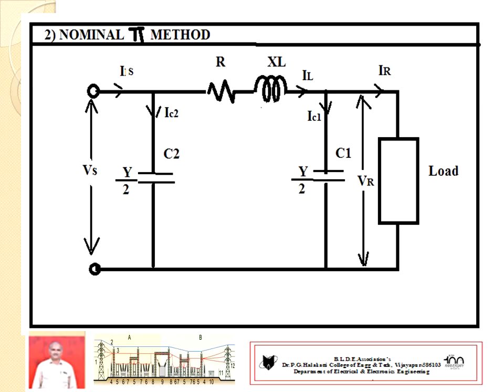In the nominal pi method, the capacitance is placed at two ends: fifty percent of capacitance is placed nearer to the sending end side and fifty percent is placed nearer to the receiving end side, as shown in the figure. The series impedance is total R, where R is the resistance of the line per phase and XL is the inductive reactance of the line per phase. VS is the sending end voltage and VR is the receiving end voltage for the phase system.